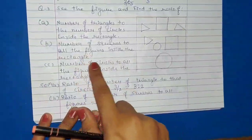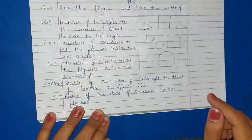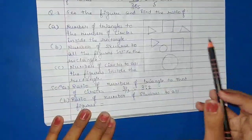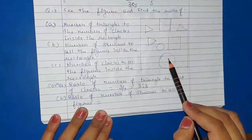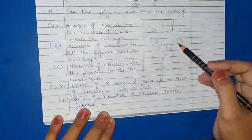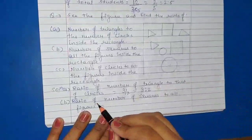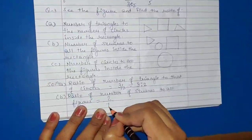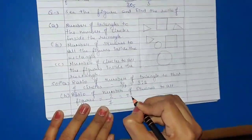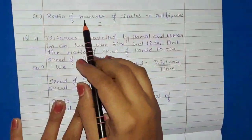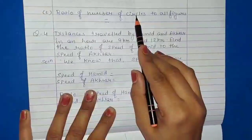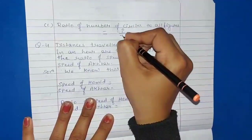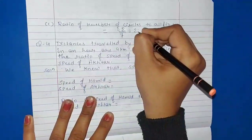Part B: number of squares to all figures inside. There are 2 squares, and counting all figures: 1, 2, 3, 4, 5, 6 and 7 — so the ratio of squares to all figures equals 2 upon 7, which equals 2 ratio 7. Part C: ratio of number of circles to all figures — there are 2 circles and 7 total figures, so 2 upon 7 equals 2 ratio 7.